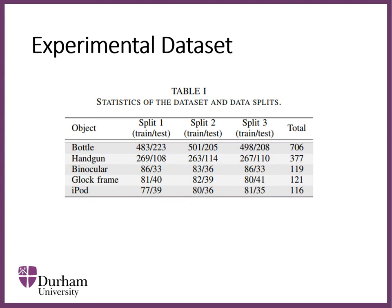We conduct experiments on our bespoke dataset, which contains five target objects: bottle, handgun, binocular, Glock frame, and iPod. 70% of the data is used for training and 30% for testing. Three training-test splits are randomly generated for reliable experimental results.